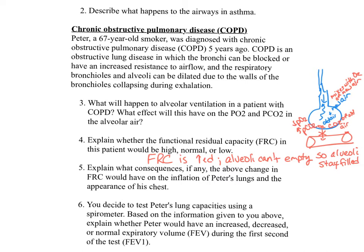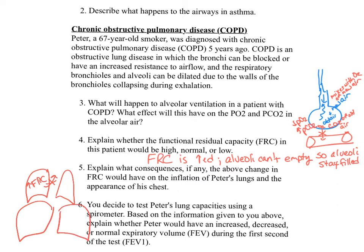The residual volume component of the functional residual capacity would be increased the most, because the patient would not be able to breathe that air out and it would remain in the lungs. Number five: explain what consequences the above change in FRC would have on the inflation of Peter's lungs and the appearance of his chest. Since he's not able to breathe that air out and his FRC has increased, his lungs would most likely be hyperinflated and his chest would look hyperinflated — like a barrel. People with COPD are often barrel-chested.